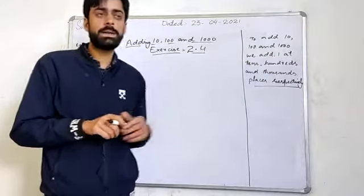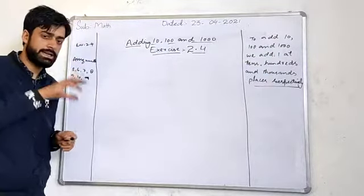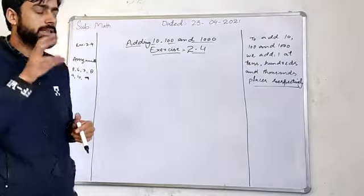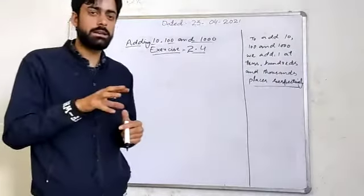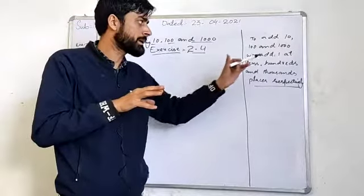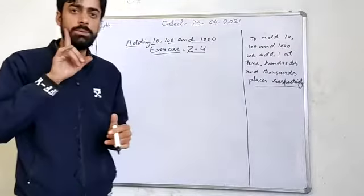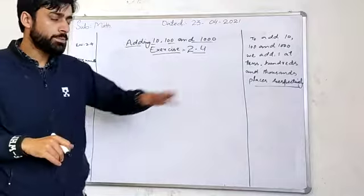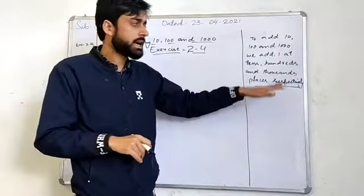When we have to add any number — whether 1, 100, or 1000 — what do we do? If we add 1, it will affect the same place.